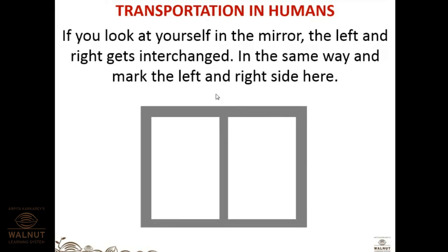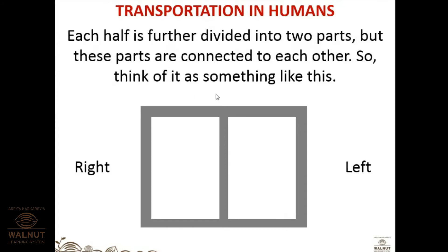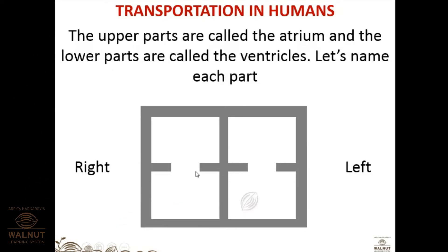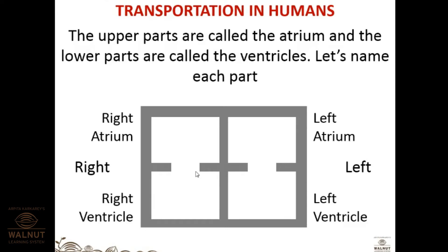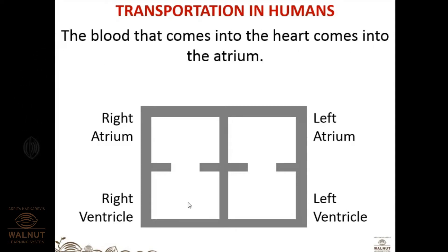If you look at yourself in a mirror, left and right get interchanged — a laterally inverted image. Similarly, mark the left and right sides of the heart diagram. Each half is further divided into two parts connected to each other by walls called valves. The upper parts are called atria and the lower parts are called ventricles — left atrium, left ventricle, right atrium, and right ventricle.